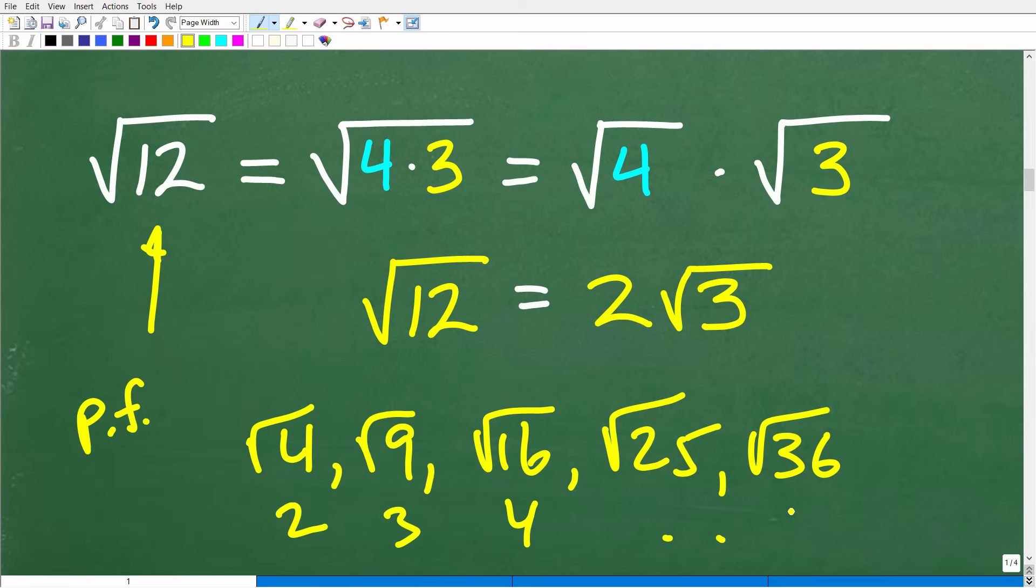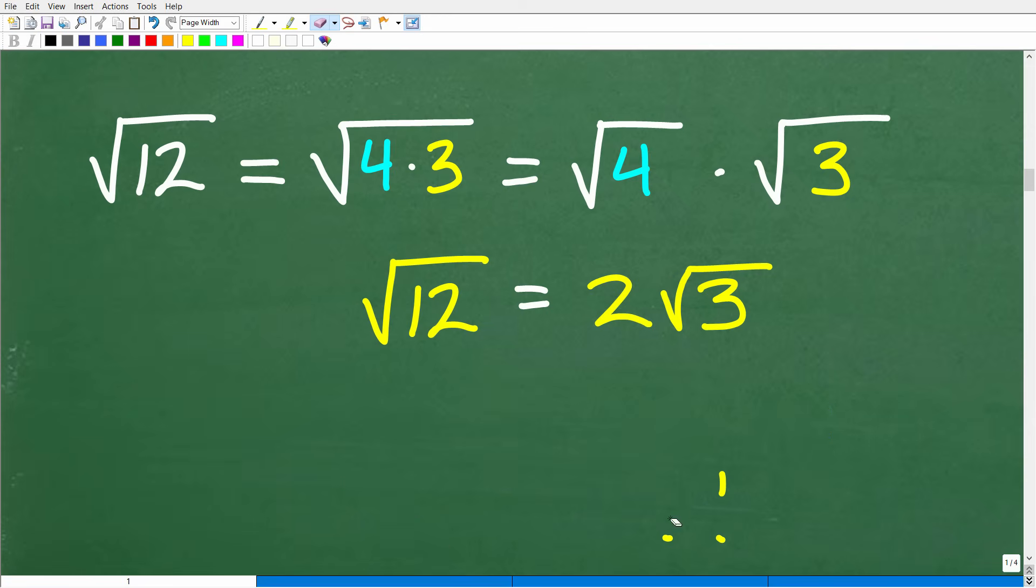So you always want to be on the lookout for perfect square factors, not just any factors like 6 and 2. Because 6 and 2, for example, for 12, aren't going to help us out because neither one of those numbers are perfect squares. So look at a number and be like, oh, there's a 4 in here, or there's a 9 in here, there's a 16 in here, whatever the case might be.